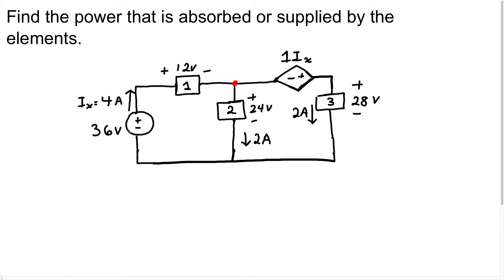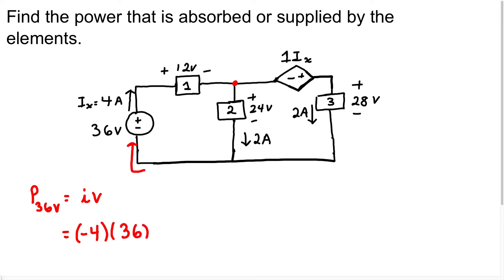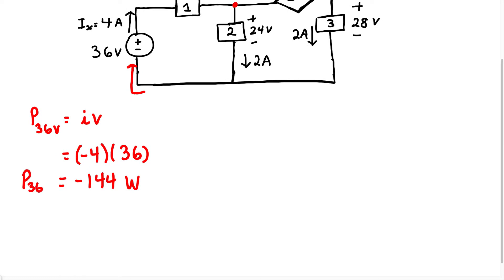We're going to start with the 36-volt source. The power in the 36-volt source equals current times voltage. The current in this element is going to be 4 amps. The current flows through the negative terminal to the positive terminal, which means it's a voltage rise. Because the current enters the negative terminal, we assume it is a negative current: negative 4 amps multiplied by 36 volts gives negative 144 watts. Because it's a negative power, it is being delivered — or supplied.